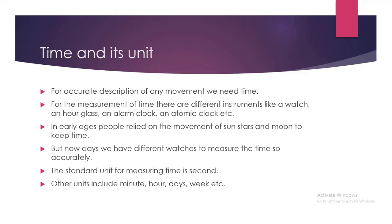Similarly, if I give the example of a race — in a race, different players run. We say player A runs fast while player B runs slow. But how much fast and how much slow do they run? For this, we need the term time so that we can describe their movement accurately. This shows that time is necessary for describing any sort of movement or working accurately.